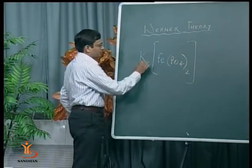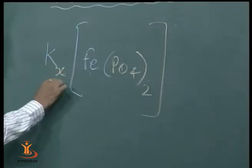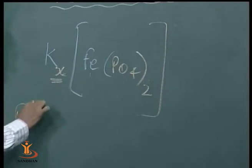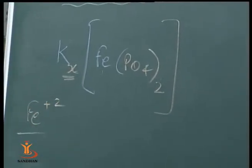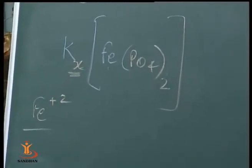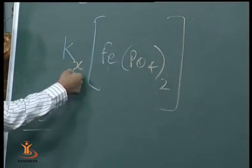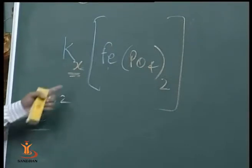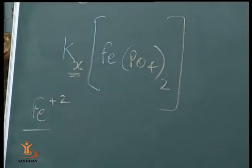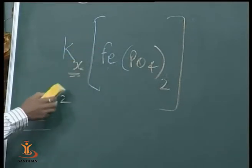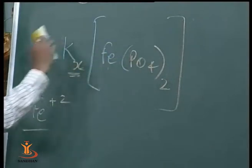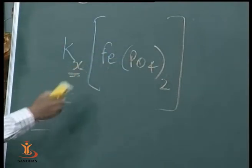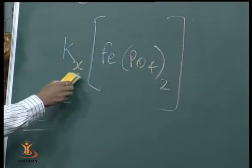You can also calculate the value of x if Fe is +2 in a complex compound with phosphate. If the oxidation state of Fe is +2 and PO₄ has a charge of −3, you can find that x equals 4.